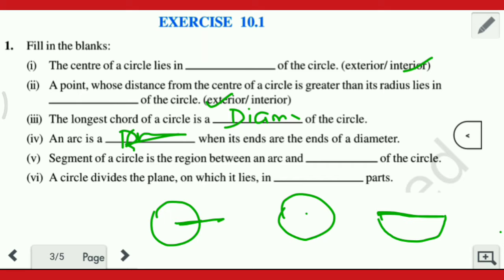Now the next question: segment of a circle is the region between an arc and dash of the circle. A circle divides the plane on which it lies in dash parts — three parts mein hum circle ko divide karte hain. Ok, so next question ki taraf badte hain. 10.1 ka question number 2.